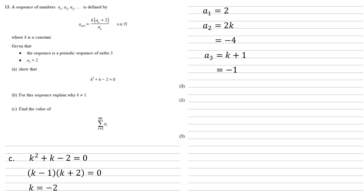We know that this is a periodic sequence of order 3, so our three answers here must keep repeating. So our sequence goes 2, minus 4, minus 1, 2, minus 4, minus 1, and so on.